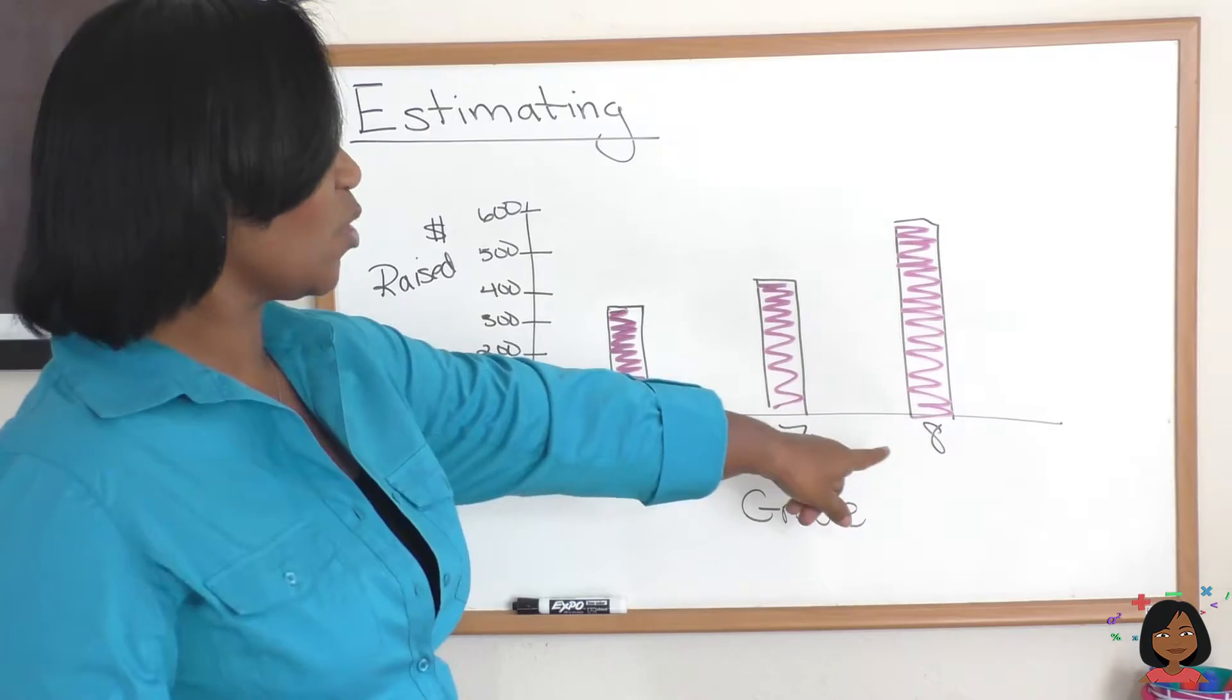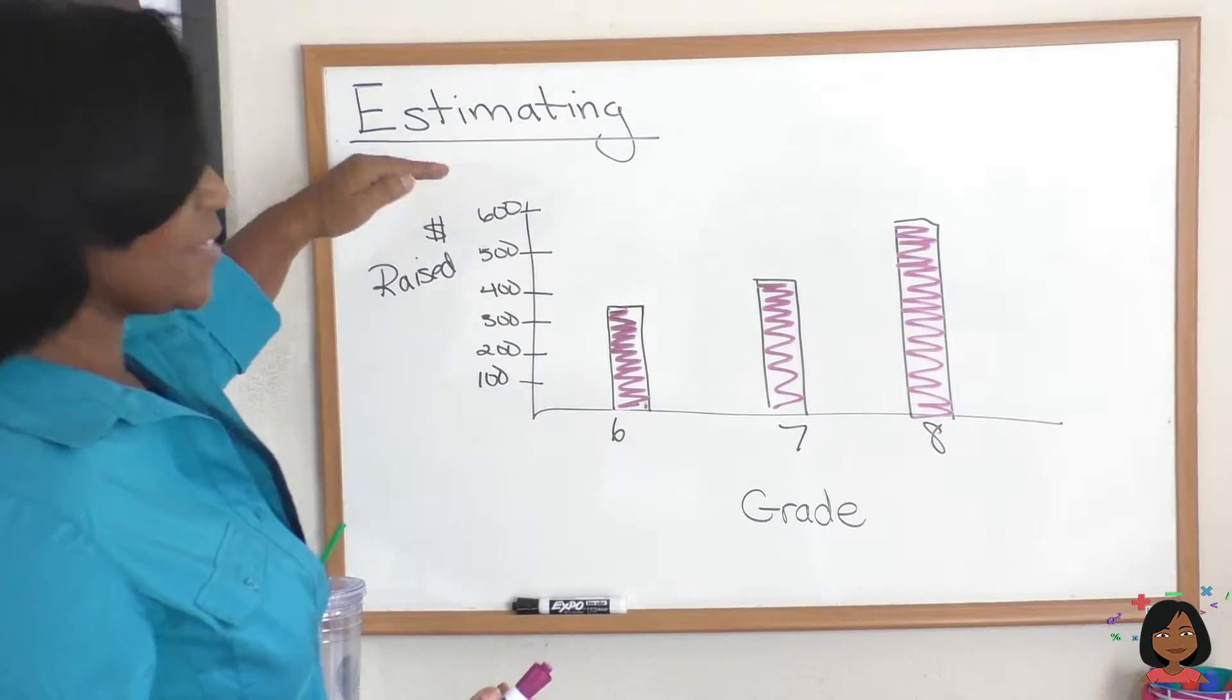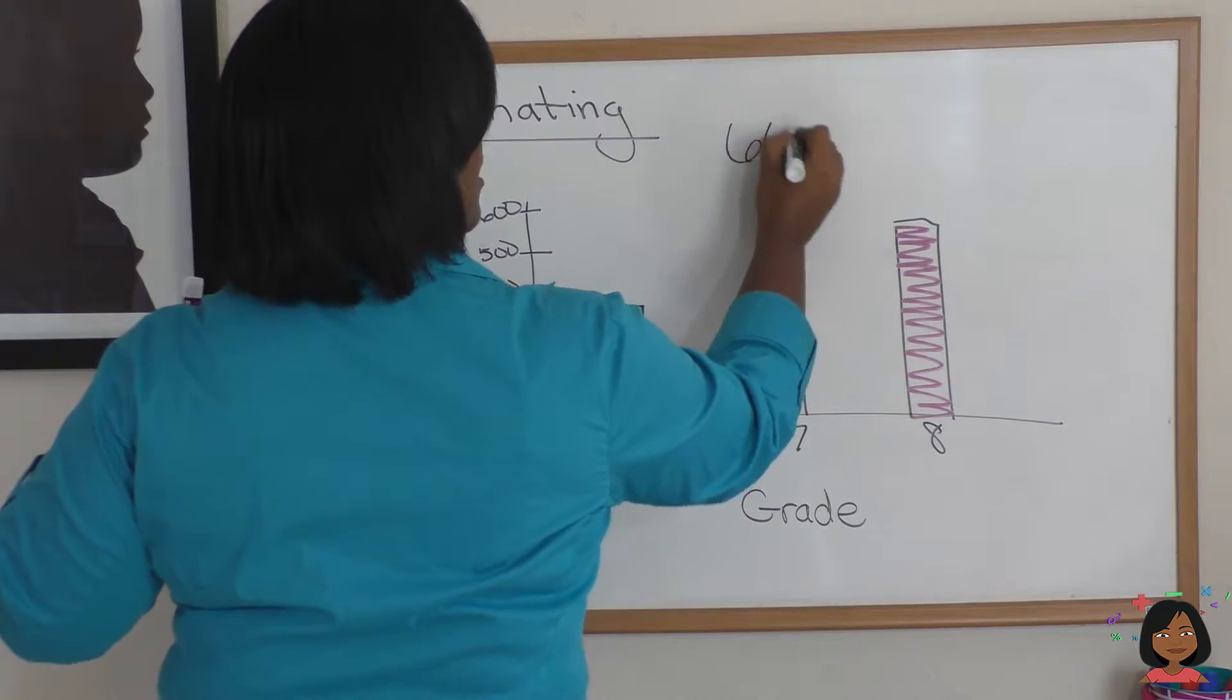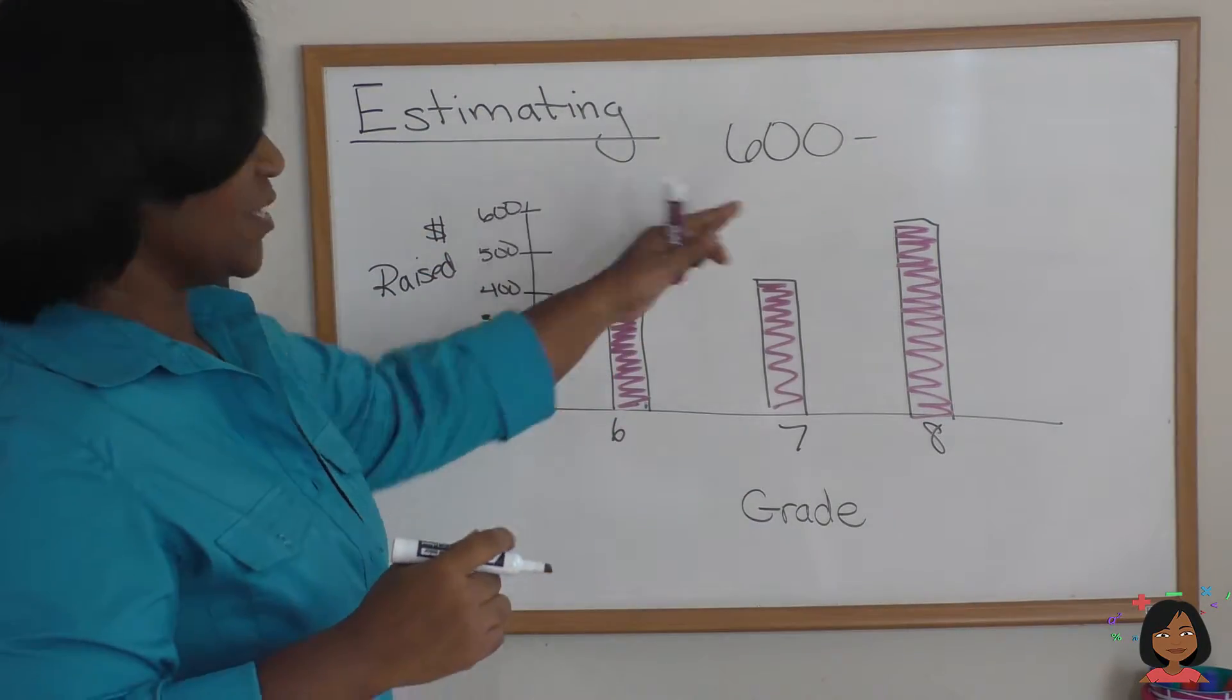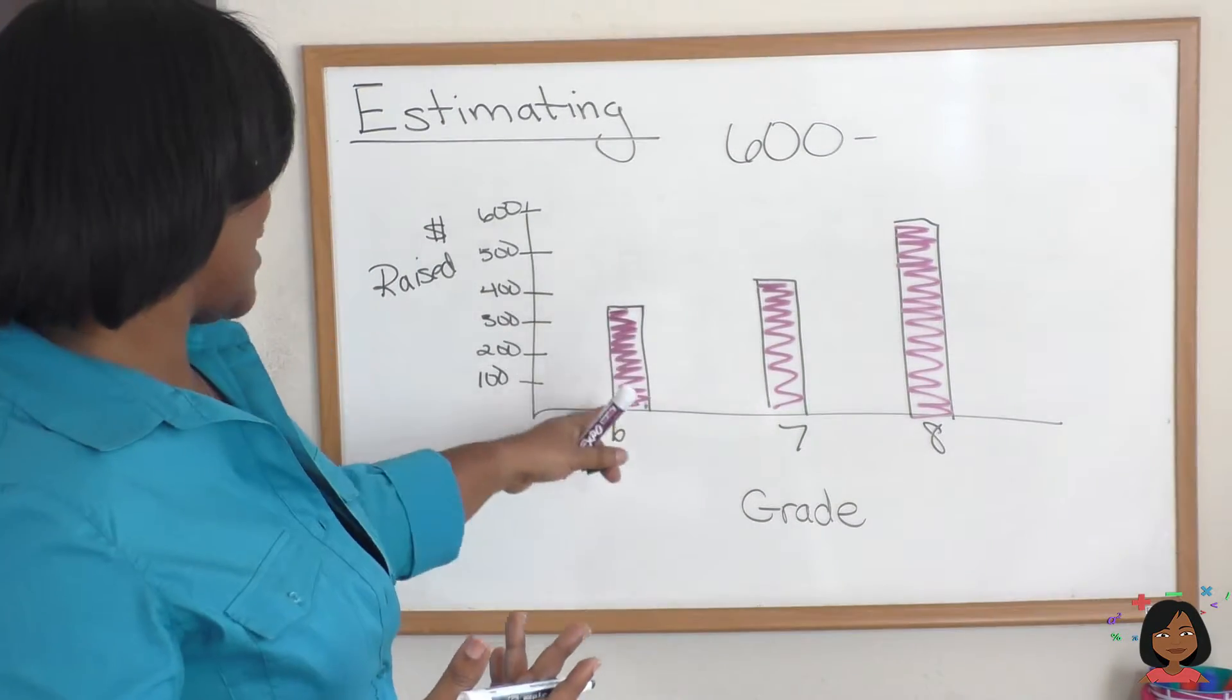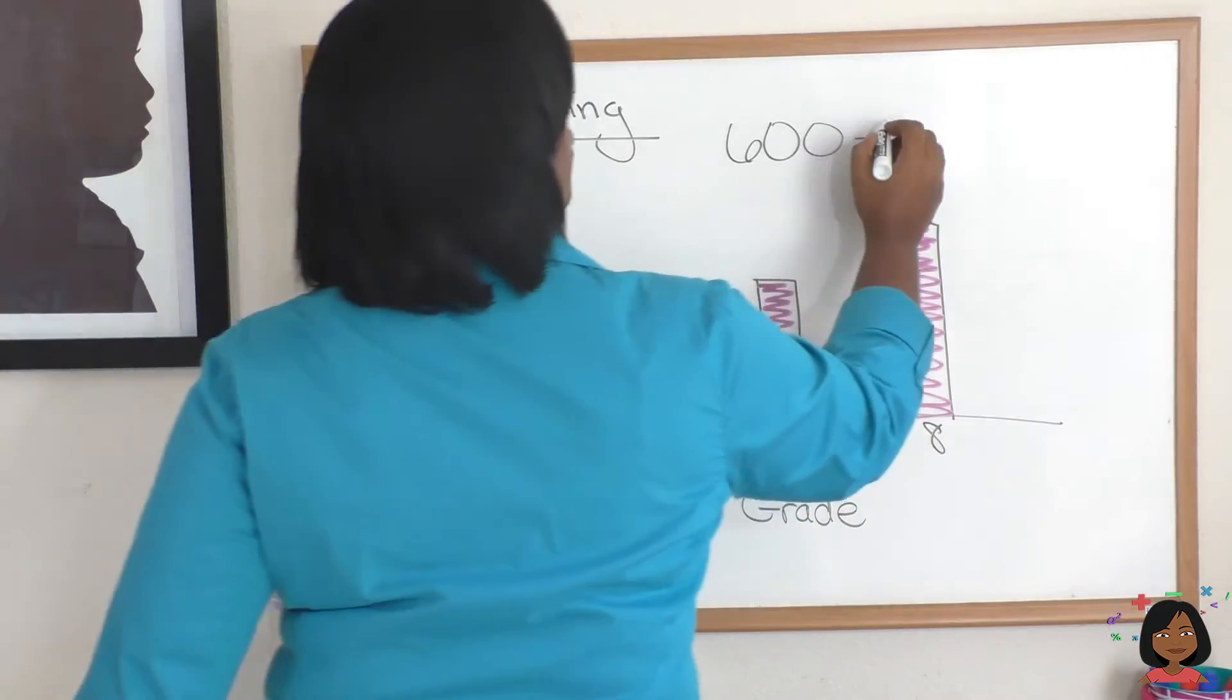Well, let's take a look. We start with the 8th grade. We estimate that they raised around $600 for their class party, so we're going to say 600 is our estimation. We're going to round this number, it looks like it's around $600. And what about the 6th grade? They raised what looks like pretty close to $400, so we're going to write down 400.